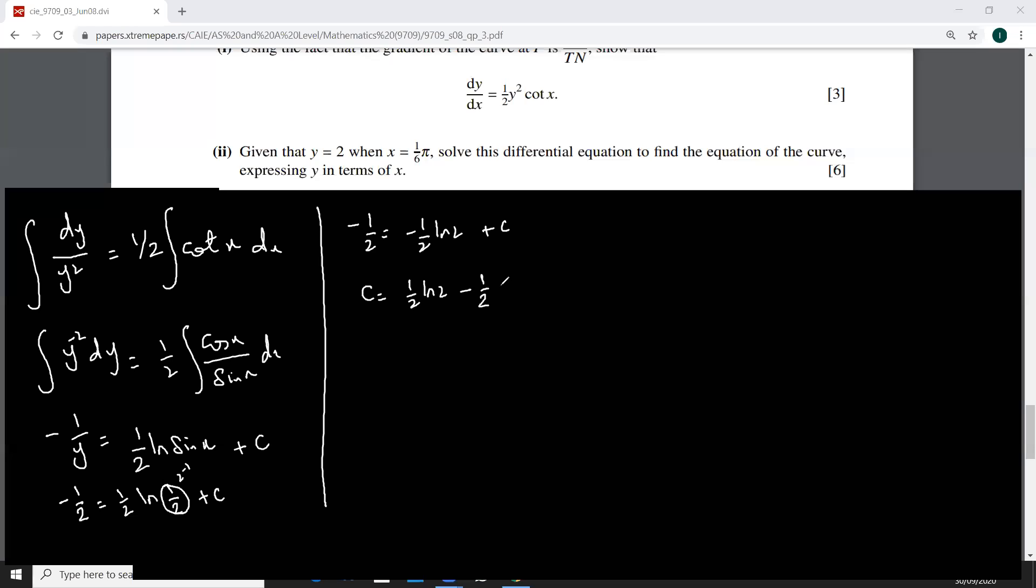Because this is a very big value, can I write this as half into ln two minus ln... Can I write it as minus one over y? That is, half is common, can I write it as ln...